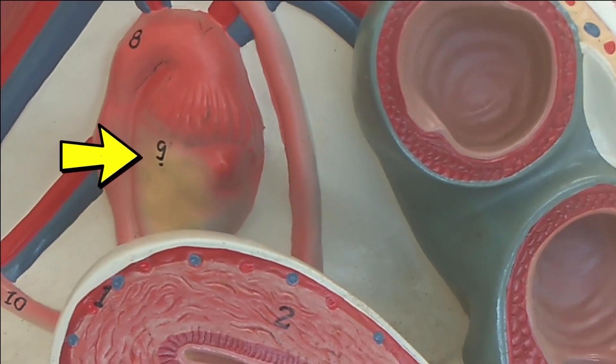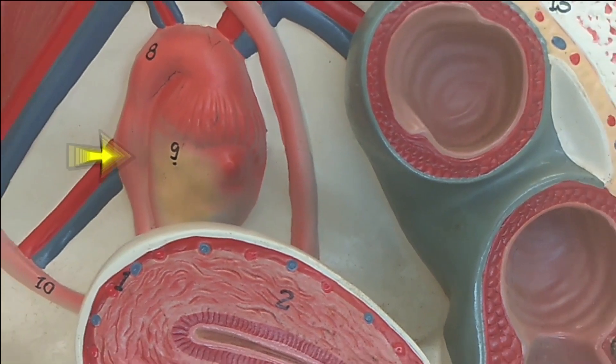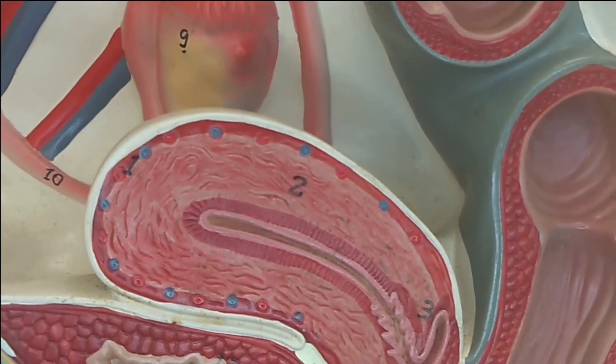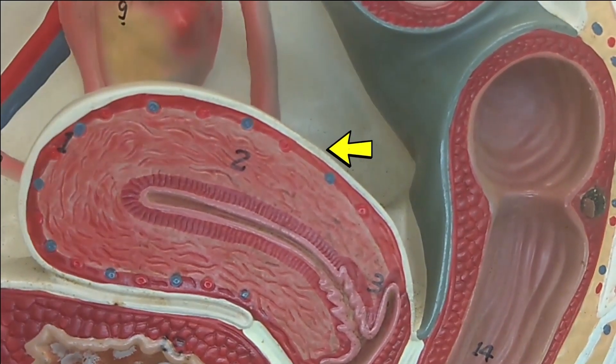You can see here, structure number 9 is the ovary and structure number 8 is the oviduct. Moving downward, you can see the uterus.